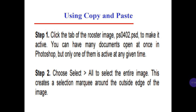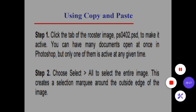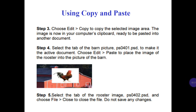Using copy and paste. Step number 1: click the tab of the rooster image to make it active. You can have many documents open at once in Photoshop, but only one of them is active at any time. Step number 2: choose Select > All to select the entire image. This creates a selection mark around the outside edge of the image. Step number 3: choose Edit > Copy to copy the selected image area. The image is now in your clipboard, ready to be pasted into another document.